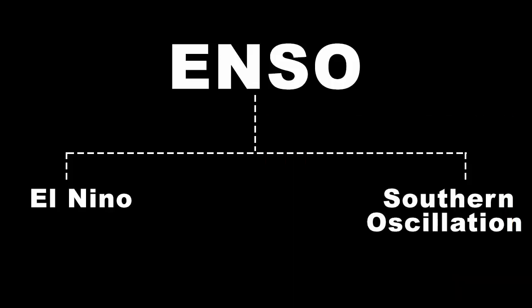So far we have learned what and where ENSO takes place. Now it's time to know how it all happens. To understand how ENSO occurs, we will break it into three phases. There is no true neutral phase in nature, since nature has a constant ongoing cycle, but for our understanding we will create a neutral state where we can see how a particular thing starts and goes on.